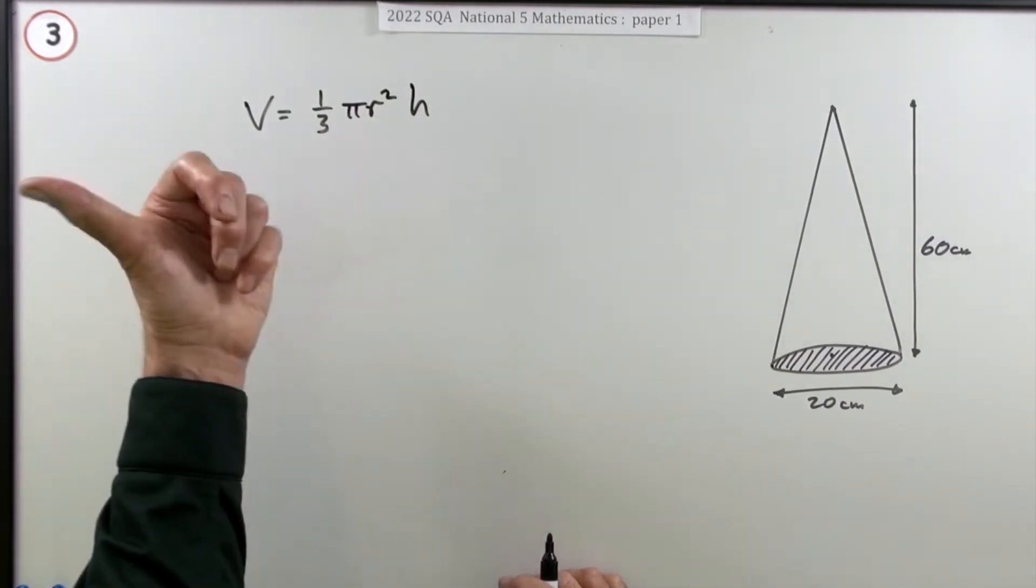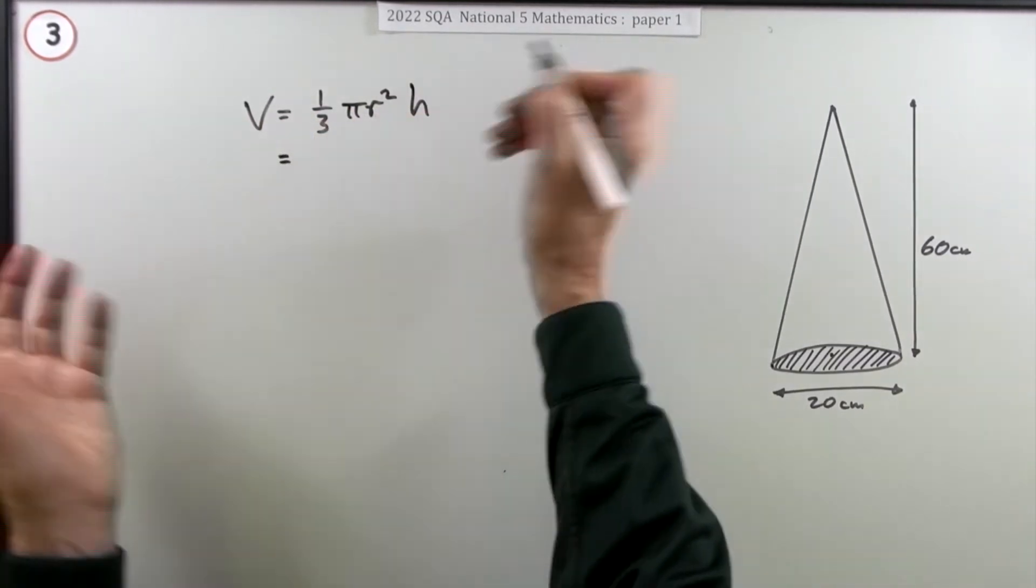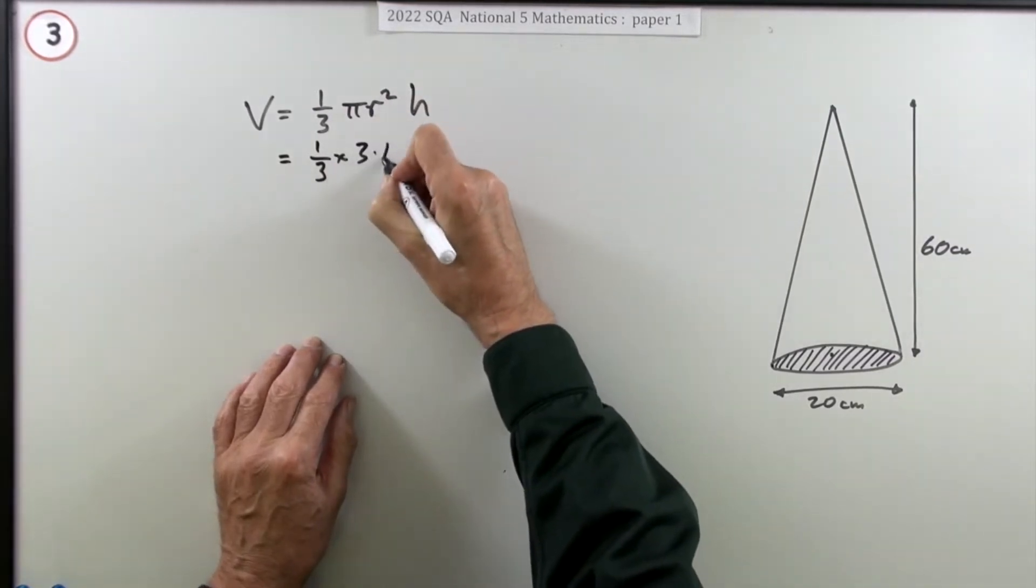If you don't know it, it's at the front. However, just putting that down doesn't get you any marks because all you've done is copied it. So it's one third of - now start putting the figures in.